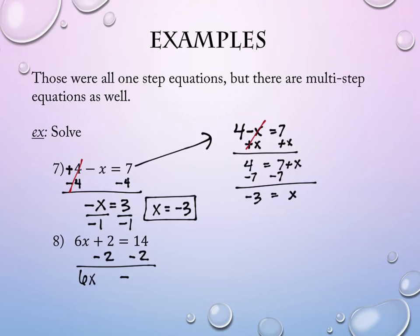The first thing we're actually going to do is going to be subtracting our 2. So the 6x is going to equal, what's 14 minus 2? 12. And then how am I going to unattach the 6? Divide by 6. 12 divided by 6 is 2.